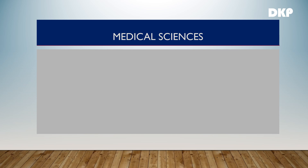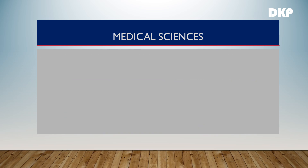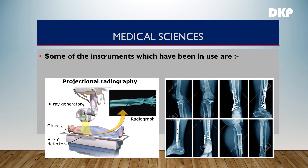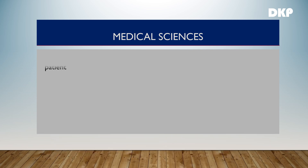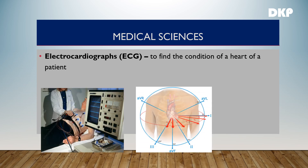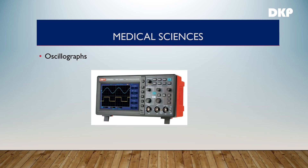Coming to the applications of electronics in medical sciences — electronic systems are used by doctors and scientists for the diagnosis and treatment of various diseases. X-rays are used for taking pictures of internal bone structures and for treating some diseases. The ECG, or electrocardiograph, is used to find the condition of the heart of a patient. Oscillographs are used for studying muscle action.